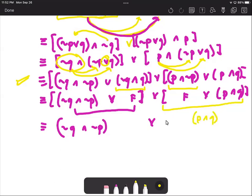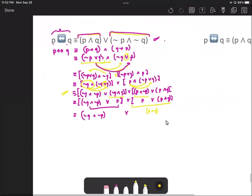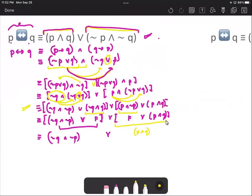Now we have achieved our goal, except that we just have to interchange or perform commutativity. So almost the same. We have p and q or not q and not p.